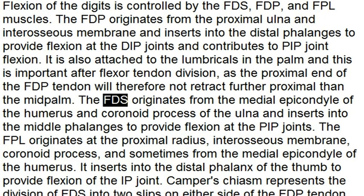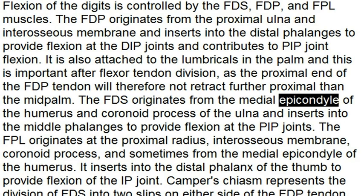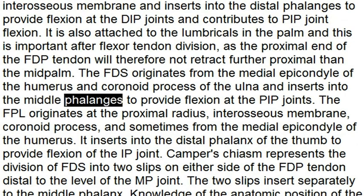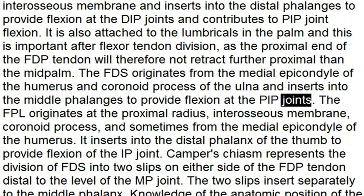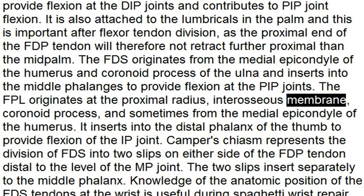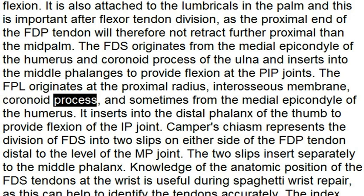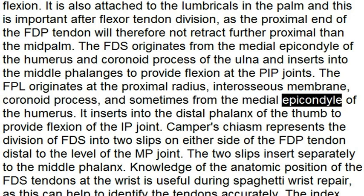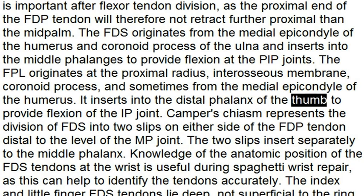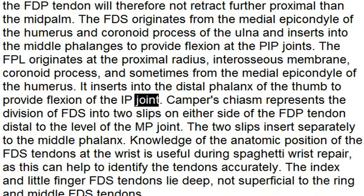The FDS originates from the medial epicondyle of the humerus and coronoid process of the ulna and inserts into the middle phalanges to provide flexion at the PIP joints. The FPL originates at the proximal radius, interosseous membrane, coronoid process, and sometimes from the medial epicondyle of the humerus. It inserts into the distal phalanx of the thumb to provide flexion of the IP joint.